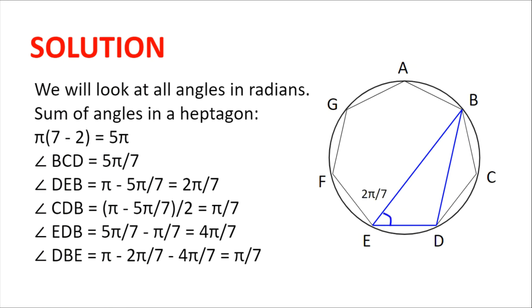Then considering the isosceles triangle BCD, angle CDB = π - 5π/7 = π/7. This means that angle EDB = 5π/7 - π/7 = 4π/7.